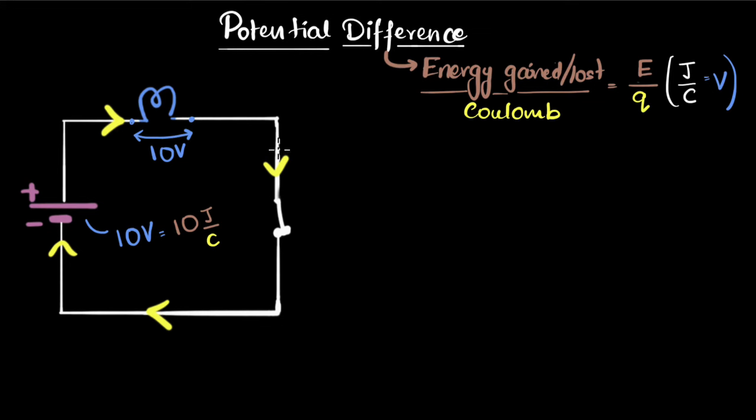But what about, let's say, between these two points? Well, the charges are not losing or gaining any energy between these two points. Now, of course, in a real circuit, the charges will lose energy because it gets converted to heat. But if we ignore that, then there's absolutely no energy gained or lost. And therefore, the potential difference between these two points is zero.